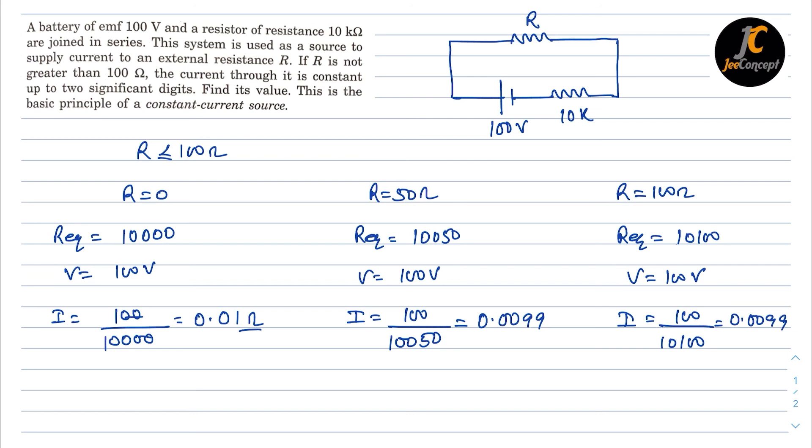So we can say in all three scenarios the current is almost constant and its value is up to two significant digits. So this is the solution of this problem.